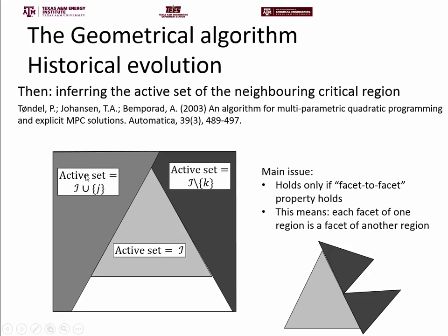The condition for the facet-to-facet property to hold, found in that paper, is that on the facet itself there is no degeneracy — meaning exactly n constraints are active on the facet. One case where this is not met is MPLP problems, where n+1 constraints are active on every facet. In that case the facet-to-facet property does not necessarily hold, which again means the algorithm cannot guarantee full exploration of the parameter space.